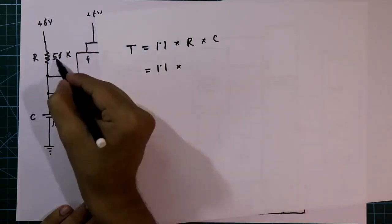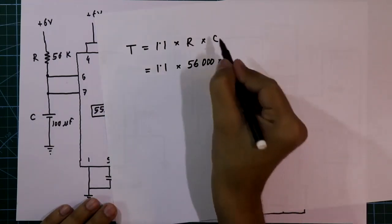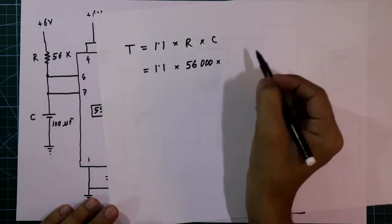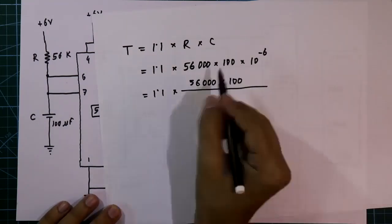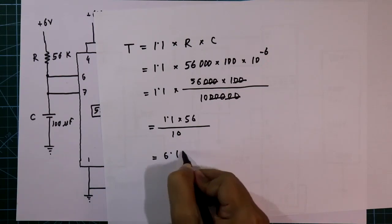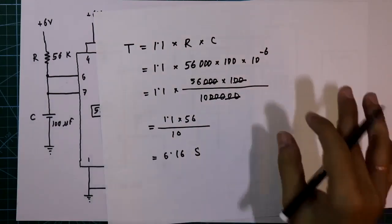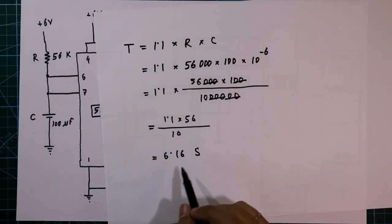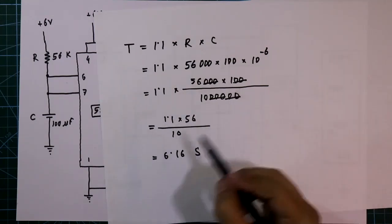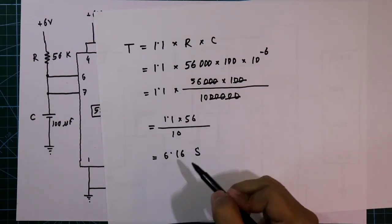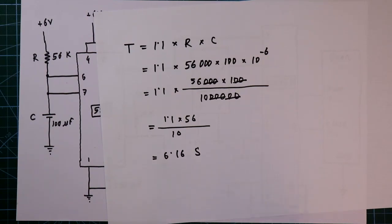In my case, R = 56 kilo ohms and C = 100 microfarad. So T = 1.1 × 56,000 × 100 × 10⁻⁶ = 6.16 seconds. With these two values, the door stays open for approximately 6.16 seconds. It is an approximate value because resistors and capacitors have some tolerance, so we will not get exactly 6.16 seconds — it may be slightly more or less.